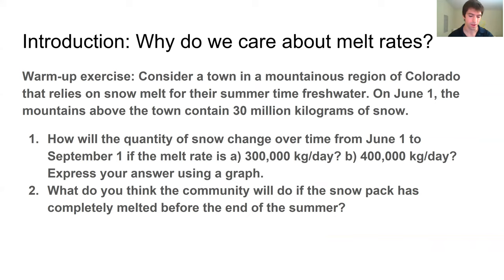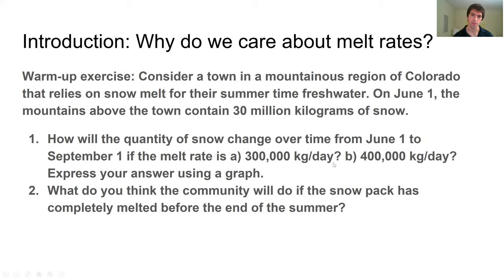Let's do a little bit of an exercise. Imagine a town in a mountainous region of Colorado that, during the summer months, relies on snowmelt for their fresh water. On June 1st, the mountains above the town contained about 30 million kilograms of snow. Think about the following two questions: If we have two different melt rates — say 300,000 kilograms per day versus 400,000 kilograms per day — how is the quantity of snow going to change over the course of the summer from June 1st to September 1st? This will be a graphing exercise your teacher will work on with you.